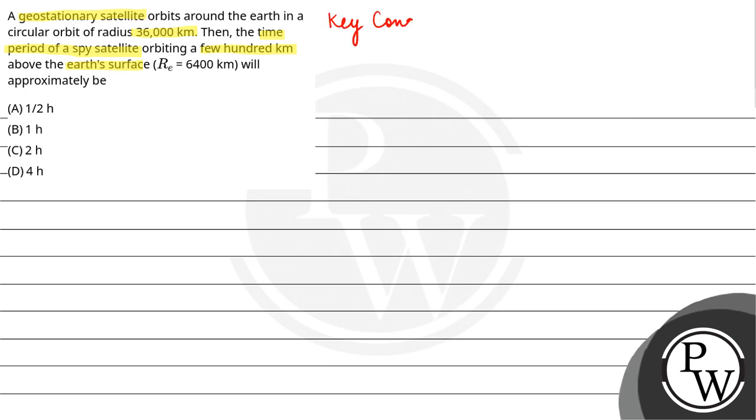So, the key concept here is Kepler's third planetary law. According to this law, the square of the time period of a body which is revolving in an orbit is directly proportional to the cube of the radius of that orbit.